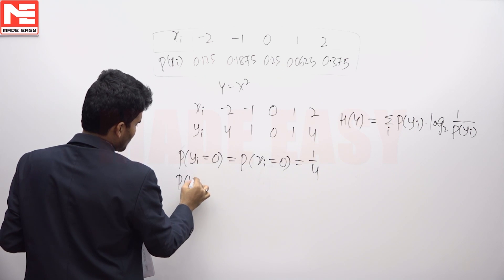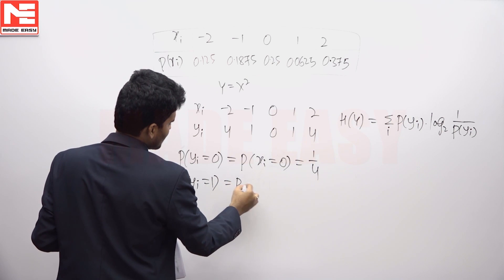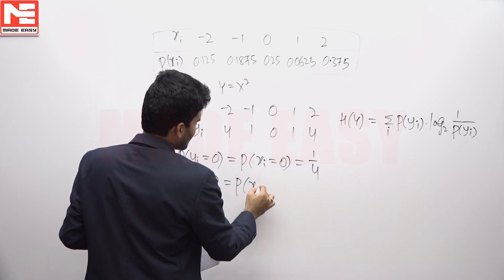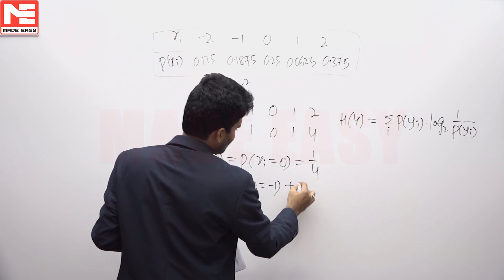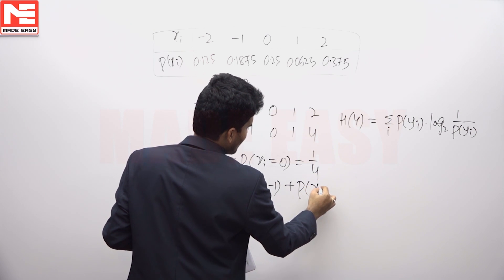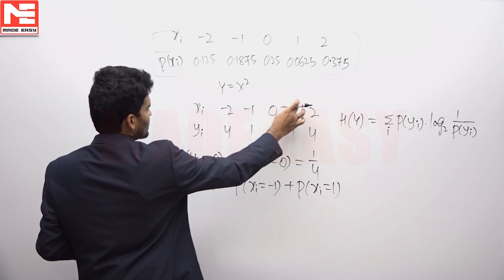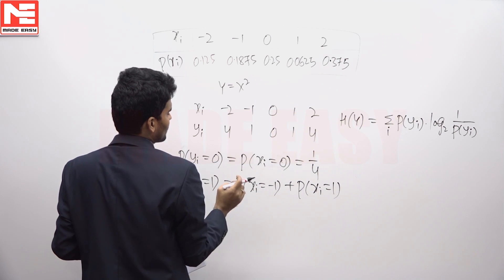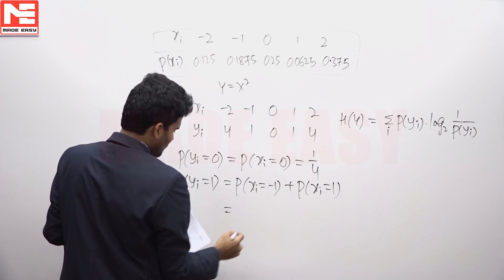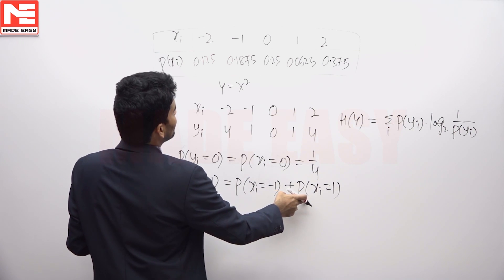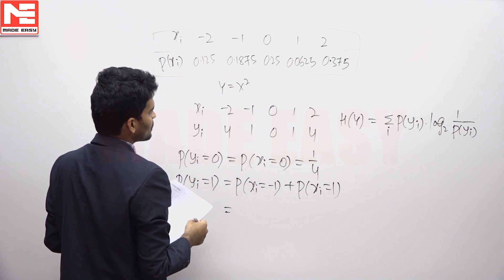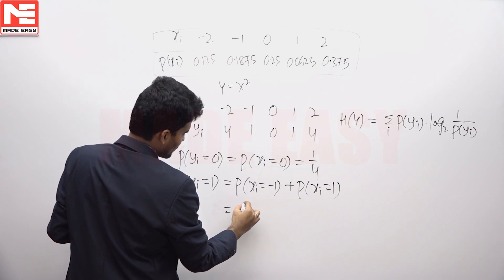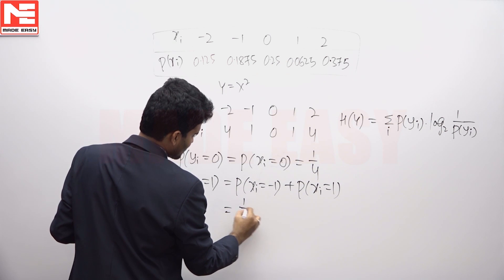Next, the probability that y equals 1. Two possibilities are there: x equals minus 1 or x equals 1. In both these cases, y will equal 1. The probability is 0.0625 plus 0.1875, which comes to be 0.25, so it is 1 by 4.